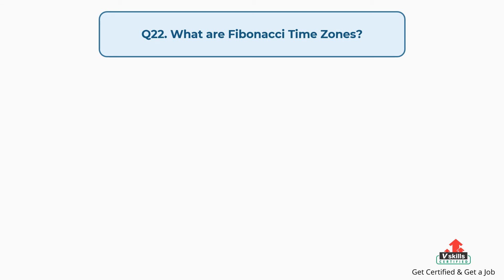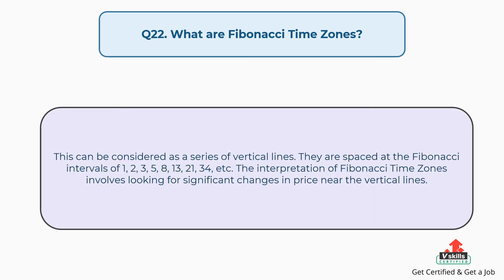Question number 22: What are Fibonacci time zones? This can be considered as a series of vertical lines spaced at the Fibonacci intervals of 1, 2, 3, 5, 8, 13, 21, 34, etc. The interpretation of Fibonacci time zones involves looking for significant changes in price near the vertical lines.